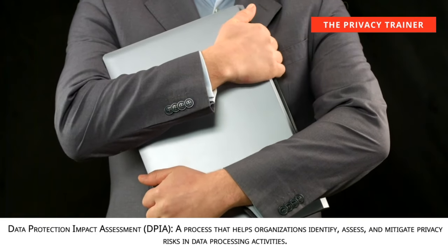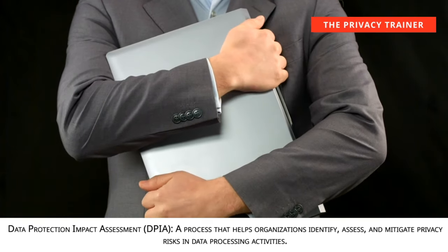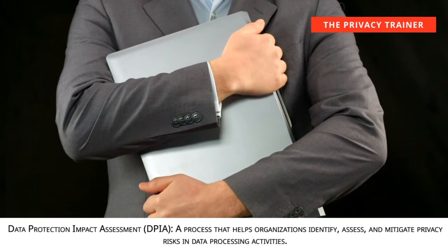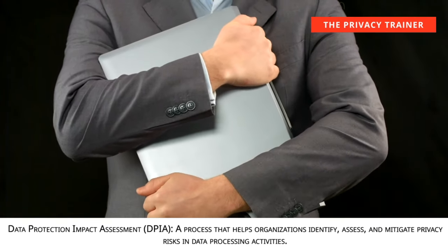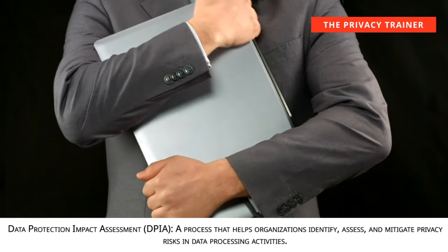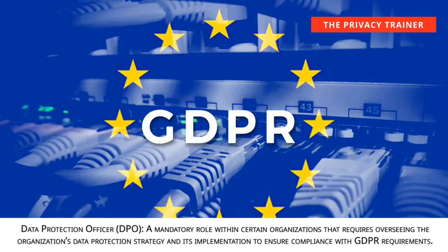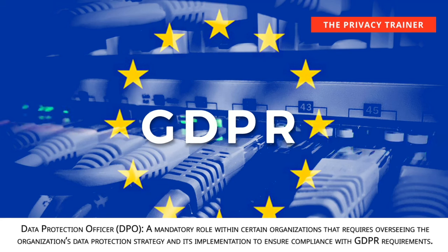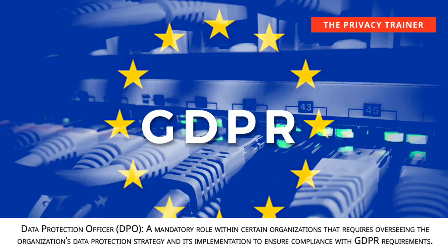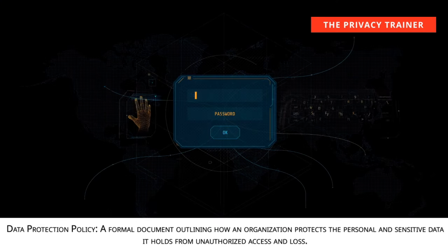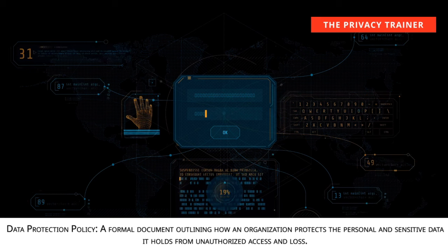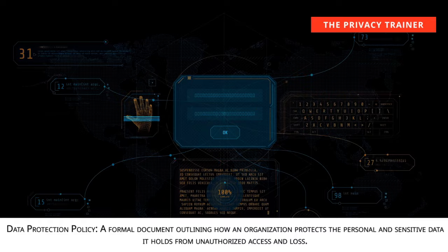Data protection impact assessment, DPIA. A process that helps organizations identify, assess, and mitigate privacy risks in data processing activities. Data protection officer, DPO. A mandatory role within certain organizations that requires overseeing the organization's data protection strategy and its implementation to ensure compliance with GDPR requirements. Data protection policy. A formal document outlining how an organization protects the personal and sensitive data it holds from unauthorized access and loss.